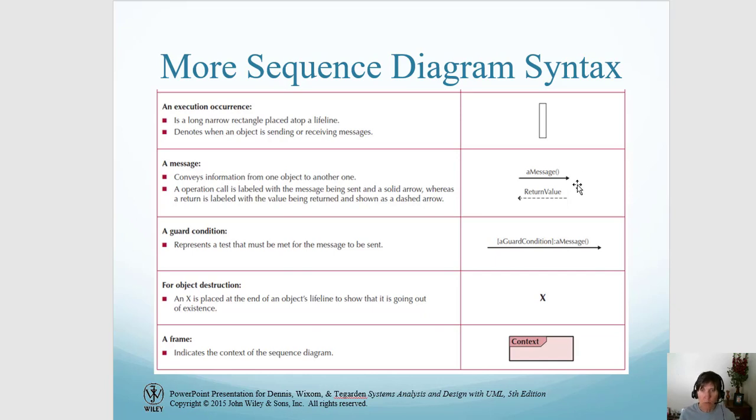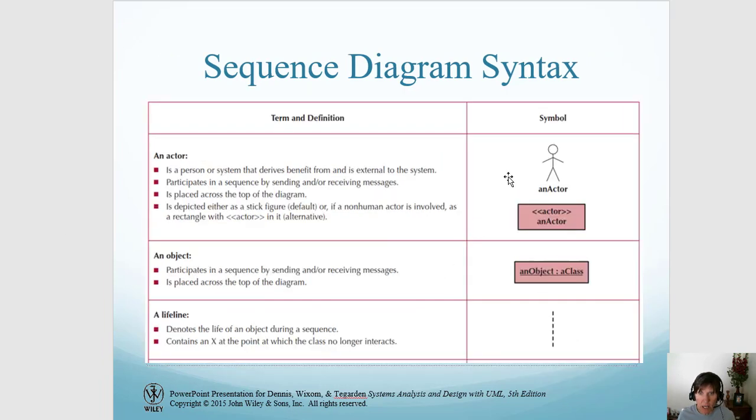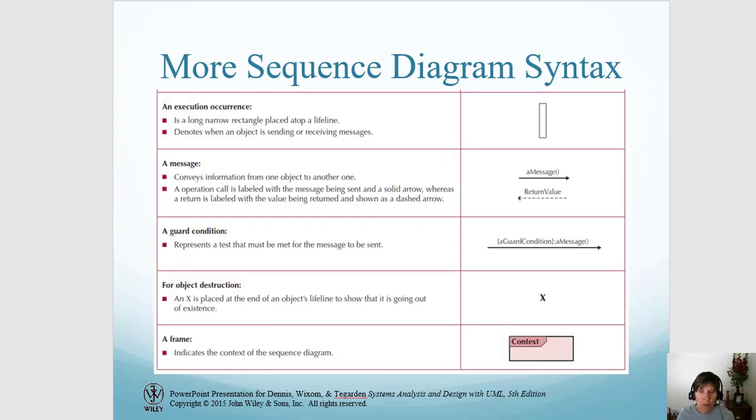You can add a guard condition on a message that would limit it - that message would not be sent until this guard condition is met. An X would go at the bottom of a lifeline at the end of the dotted line, and this would indicate that an object is going out of existence, so the object itself is being destroyed.